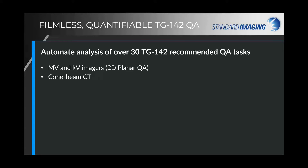The cone beam CT utilizes the CatFan phantom from Phantom Laboratories, typically included with Varian or Elekta cone beam systems. Our MV and KV 2D planar QA uses our QC-KV and QC-3 phantoms. For MLC QA tests, we have both image-based tests — including the picket fence test, leaf transmission, and leaf position — and log file-based tests, which are a true leaf speed analysis calculating and reporting feedback on each individual leaf speed within the MLC chain.